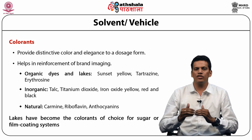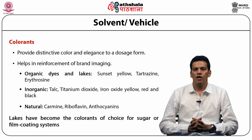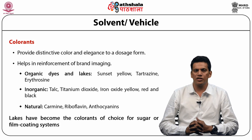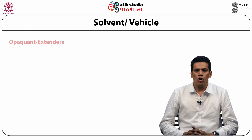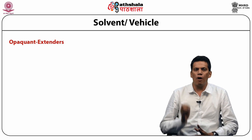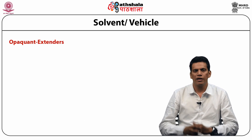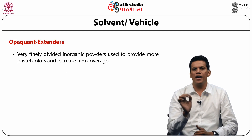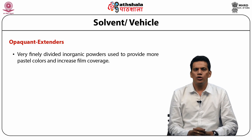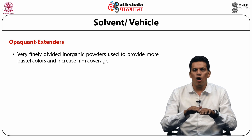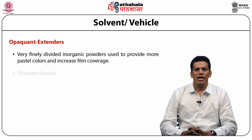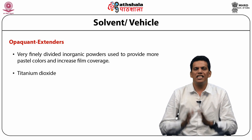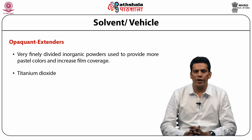The last but not least: opaquents find an important place in coating. They are very finely divided inorganic powders used to provide more pastel colors and increase film coverage. Titanium dioxide is the backbone of opaquents and is widely used.